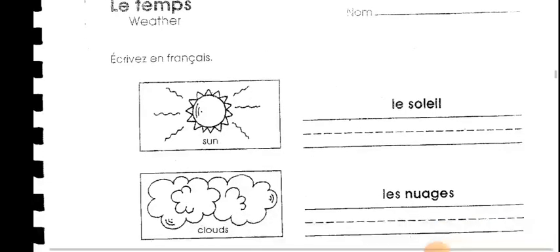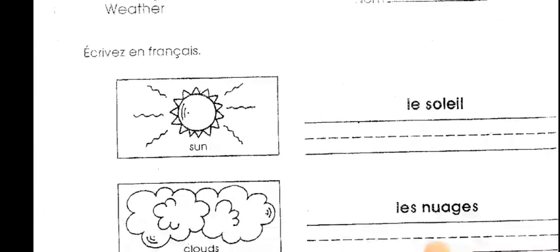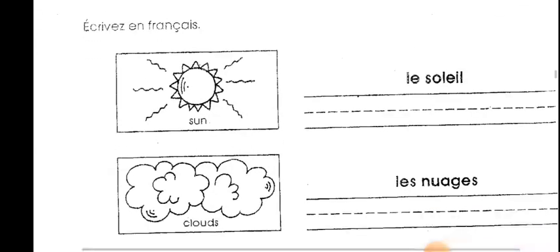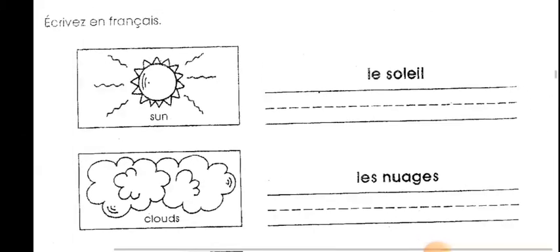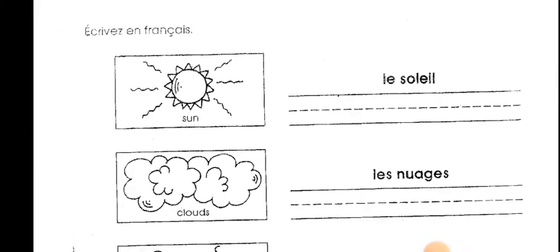So we're going to look at some of the phenomena — for example, how to call the sun, how to call clouds, and how to call rain, and so many others, because we know these are the things which bring alongside the different weather conditions which we obviously have.